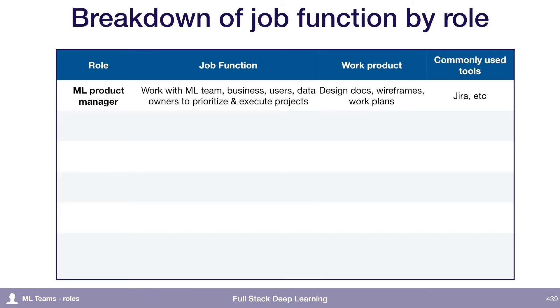I'm going to try to break down the job function for each of these roles. Machine learning product manager is a relatively new role — this is actually the first time I've included it in this slide. Machine learning product managers' job is to work with the ML team, but also the business, the users, and the data owners. Their goal is to prioritize projects and make sure that projects are executed according to requirements. It's just like a regular product manager, but in the context of machine learning organizations, which introduces some unique challenges.